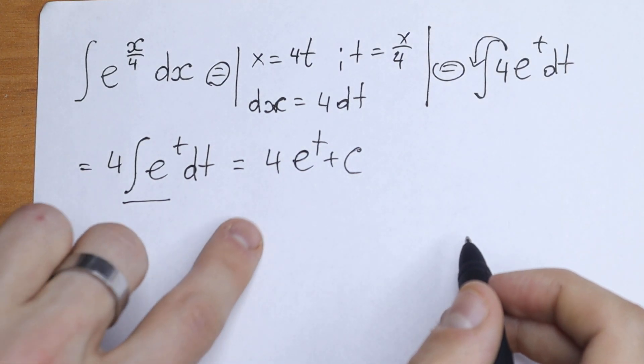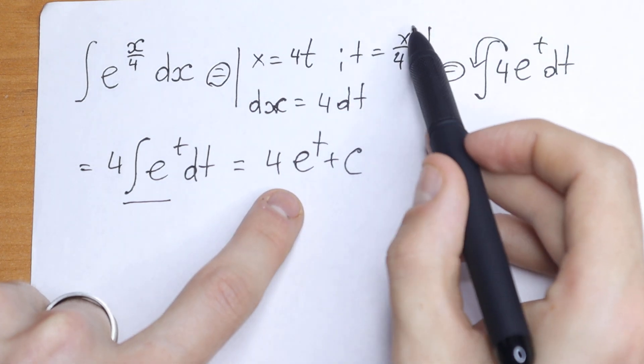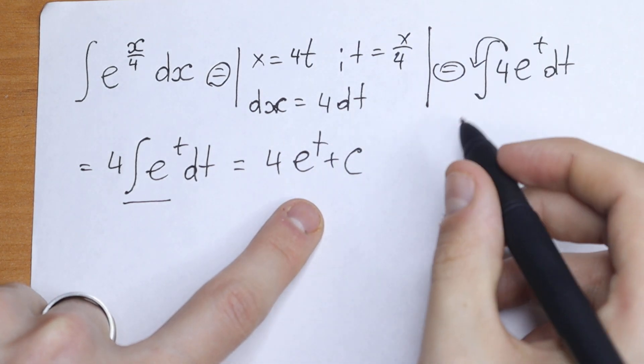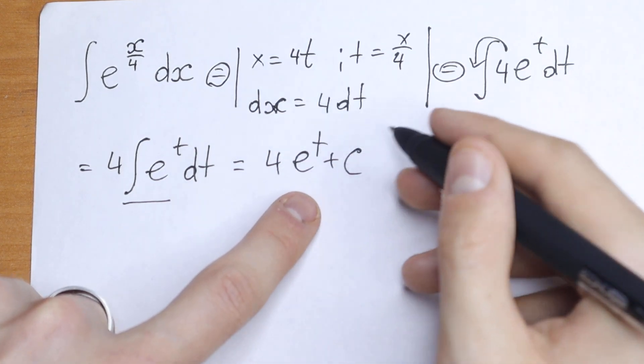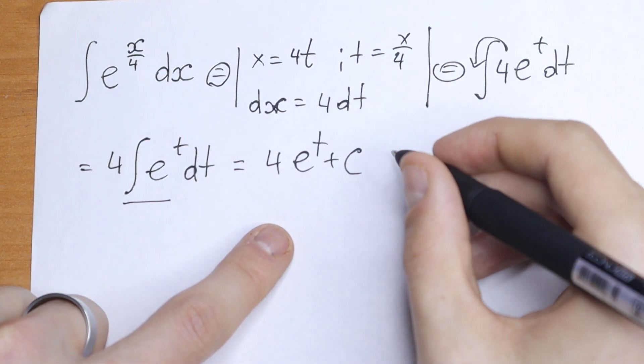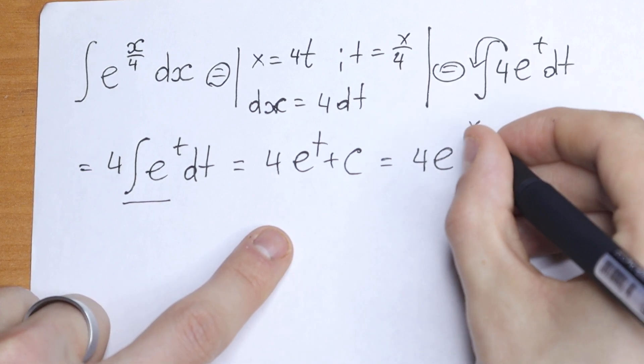Finally, let's go back to our substitution. We take t equal to x over 4 and substitute back. As a result, this integral equals 4e to the power x over 4 plus c.